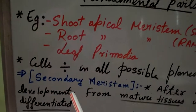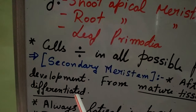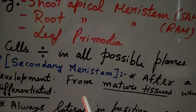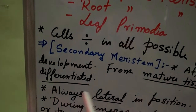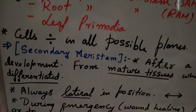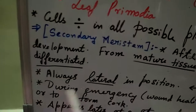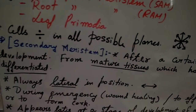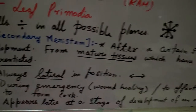The third type of initiating cell is secondary meristem. After a certain stage of development, secondary meristem is formed. It originates from mature tissues which have already divided or differentiated.